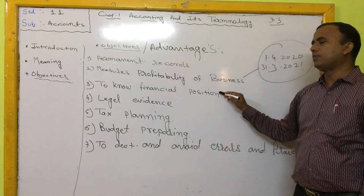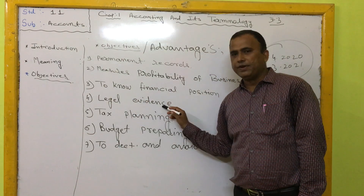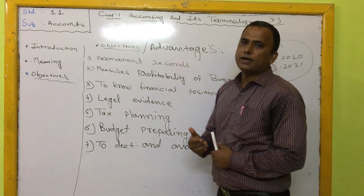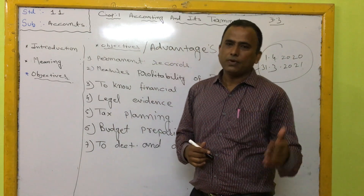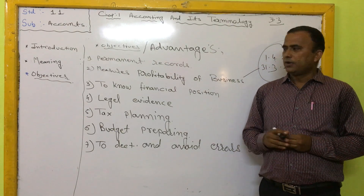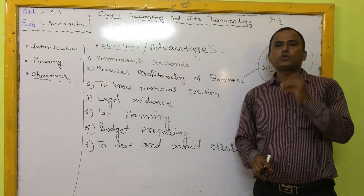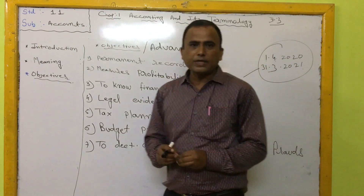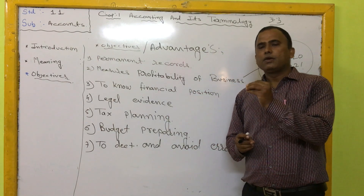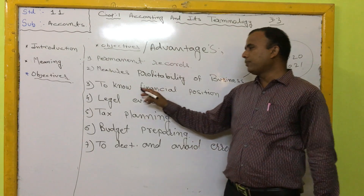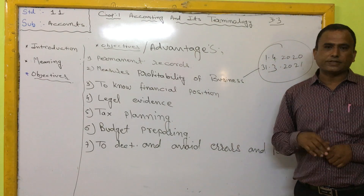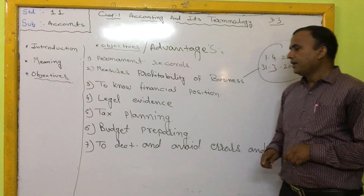The fourth objective is legal evidence. Accounting books and accounting documents can be produced as legal evidence. Various types of bills given by a trader to customers become legal documents showing the transaction that took place between the customer and the owner. Accounting books can thus serve as legal witnesses of economic transactions.